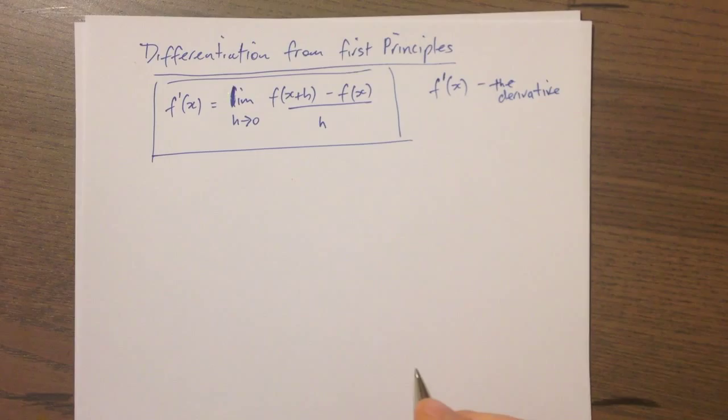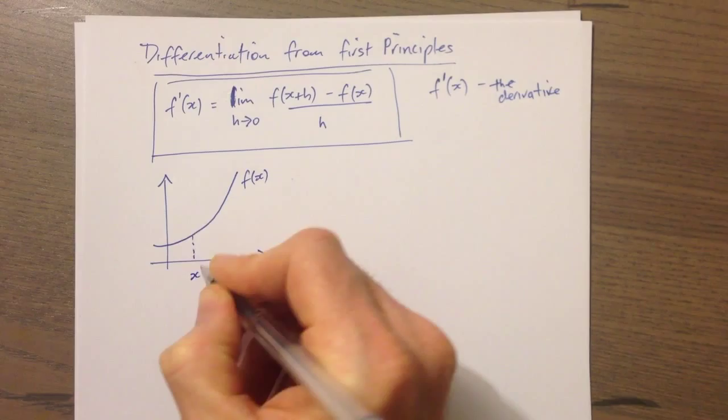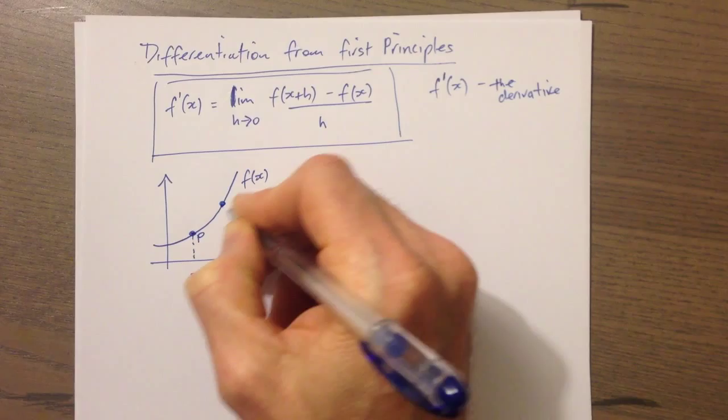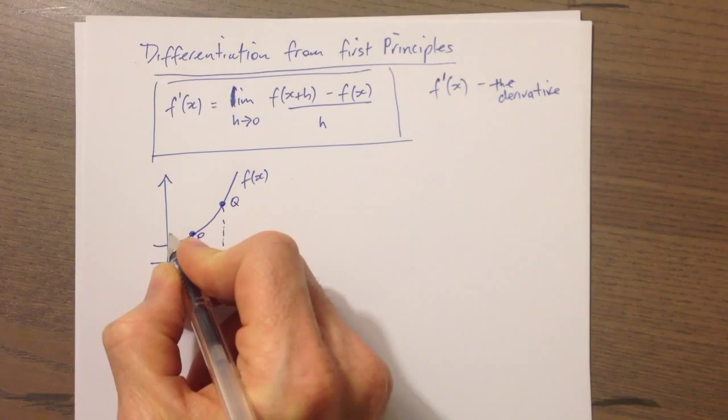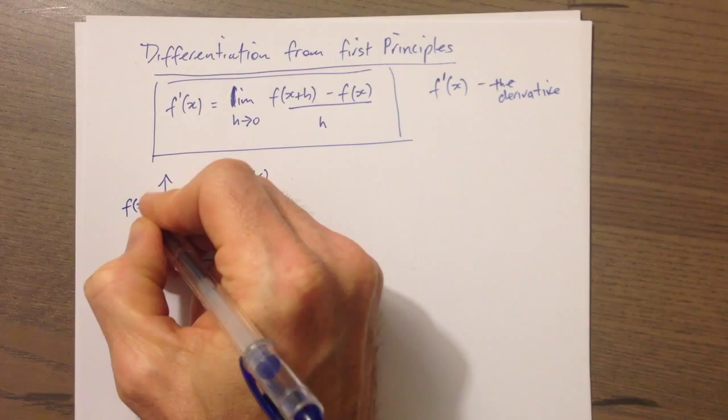Let's start with a picture. We have the xy plane and we have some function coming through — we'll call this f of x. Let's put in a point here, we'll call P, and another point here we'll call Q. The x value for P is x, and the y value will be f of x. For Q, the x value is x plus h, and its corresponding y value will be f of x plus h.